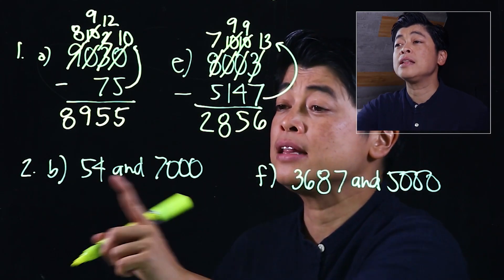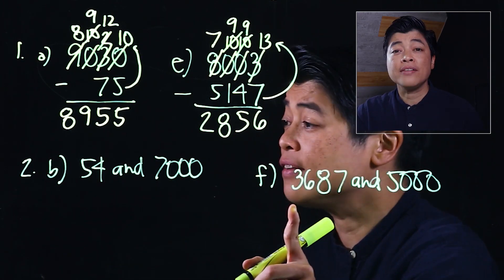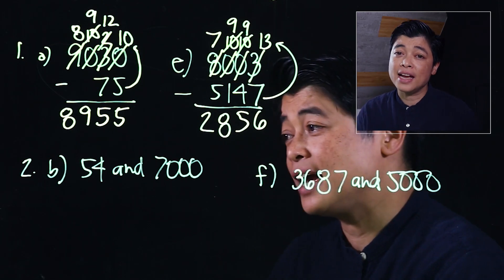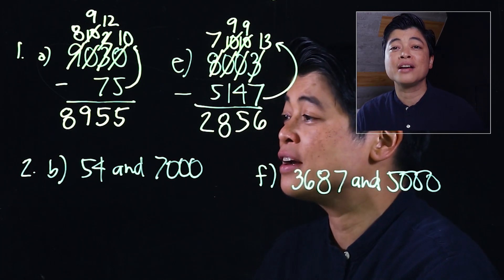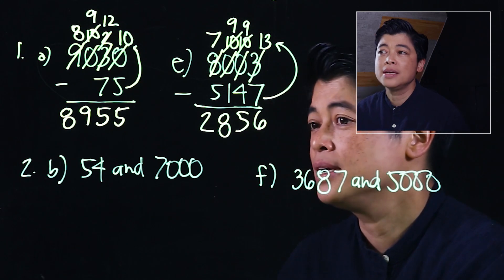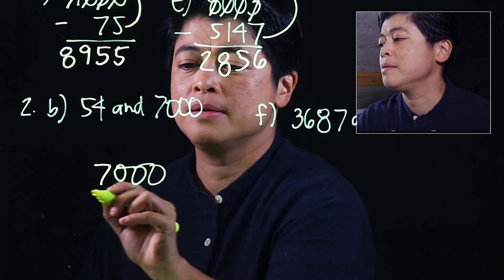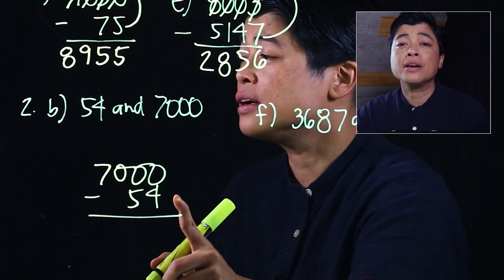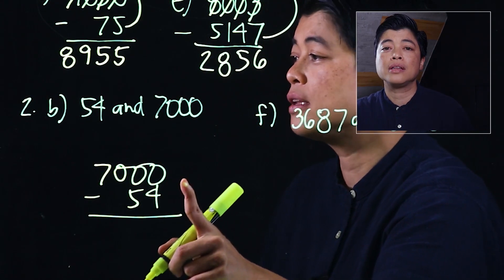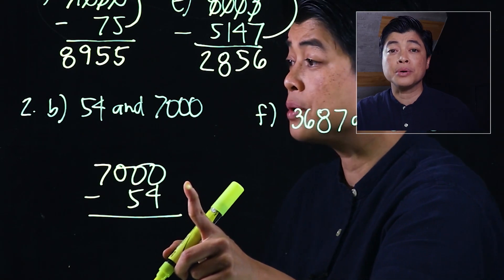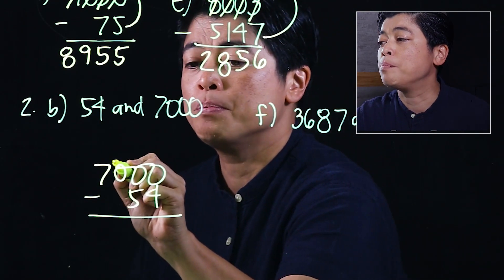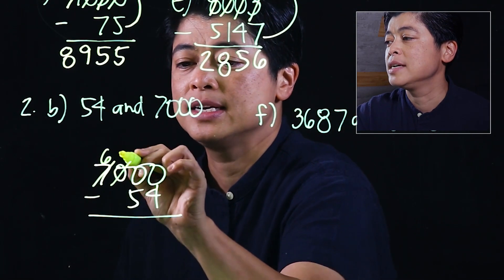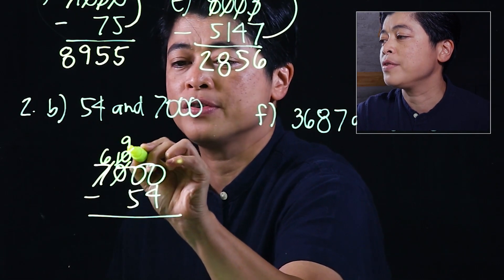In number two, letters B and F, we are asked to find the difference. The key to success is that the bigger number must be on top. This is seven thousand minus fifty-four. In grade two we learned this is called subtracting across zeros, which means we have to borrow as far as the thousands.